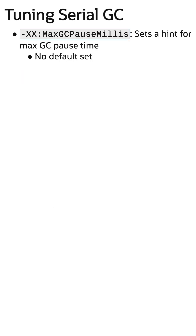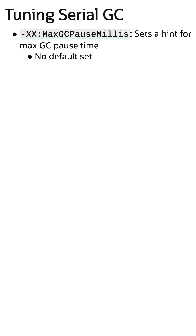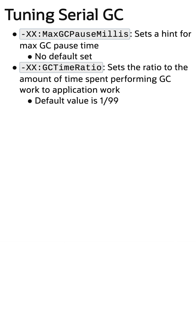Tuning Serial GC can be done with MaxPauseMills for providing a hint of max pause time, and GCTimeRatio for setting the ratio between time spent doing GC work and application work. String Deduplication was added to Serial GC in JDK18 and can be enabled with UseStringDeduplication, reducing memory at a cost of increased pause times. Happy coding!